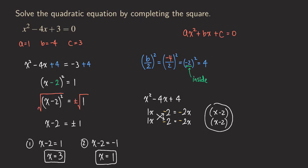You may be wondering why we can just take b, divide by two, square it, and that's what we need to add to both sides. It's because when we complete the square, we are trying to make a perfect square, which looks like a binomial squared. If we multiply that out, we'll understand why it works. Let's use our example to see.